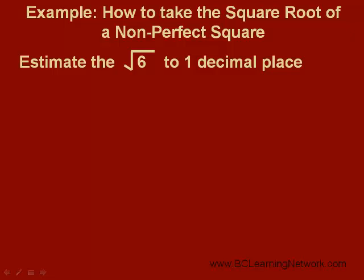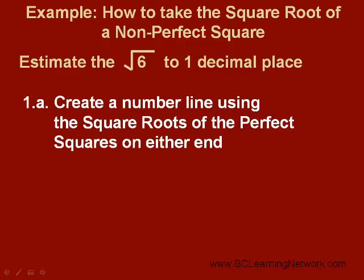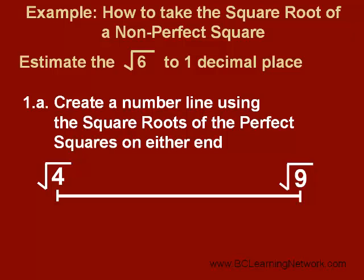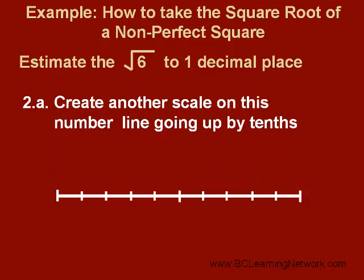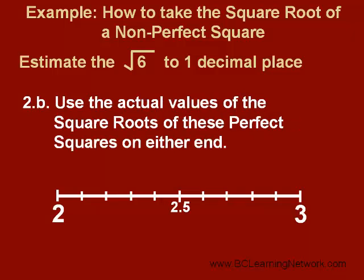Suppose we want a more accurate estimate of root 6, like to one decimal place. What we could do is create a number line using the square roots of the perfect squares on either end — so, the square root of 4 on the far left and the square root of 9 on the far right. Then, going from the square root of 4 to the square root of 9, we place consecutive square roots on the number line. Although this is not an accurate scale, it is useful for estimating. On the bottom of the number line, we create another scale going up by tenths, using the actual square roots of these values.